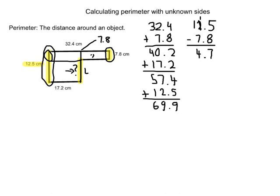We could check it. If we were to add 4.7 and 7.8, which would be the equal distance to this side over here again, we know it should equal 12.5. So 7.8 plus 4.7 is going to equal 12.5. We've solved the unknown.